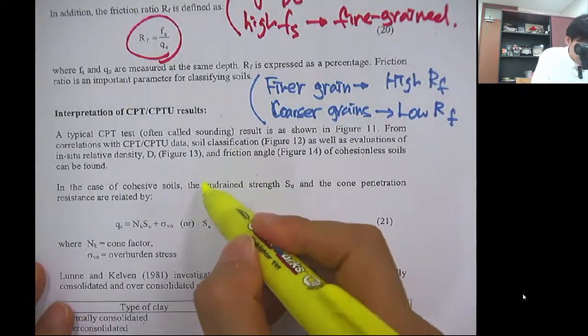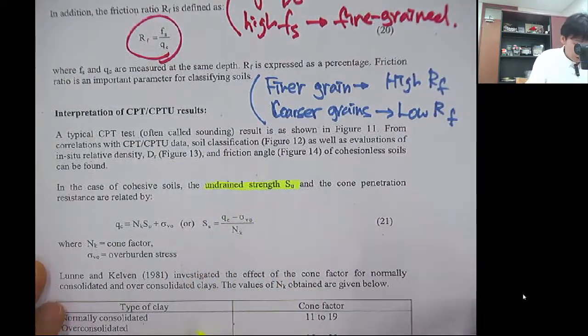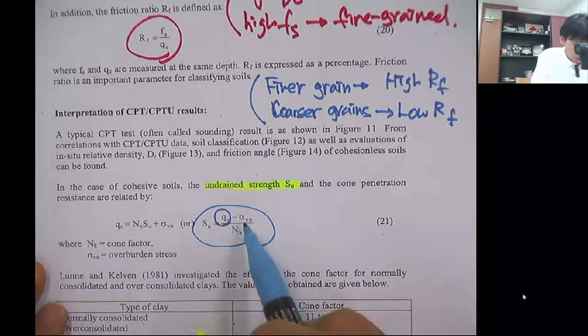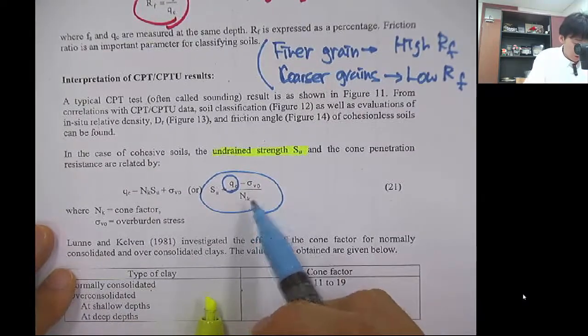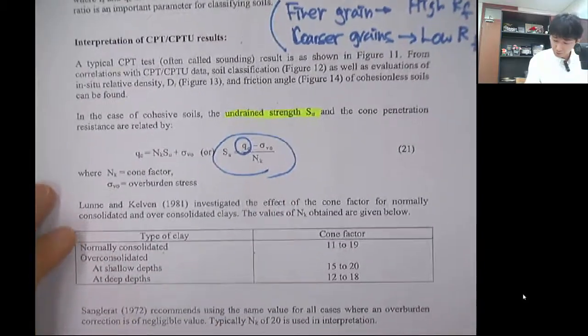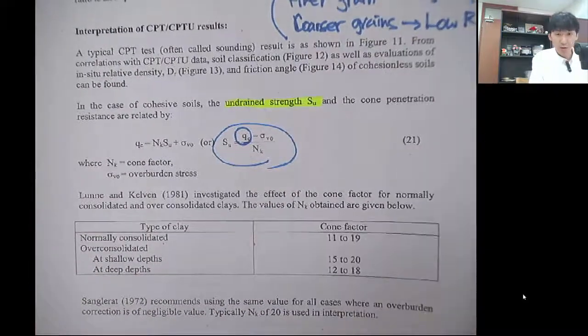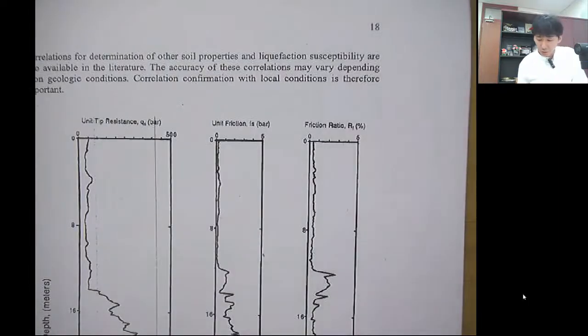The undrained strength SU is correlated to the QC value here. It is corrected for the vertical effective stress, and there is a cone factor here, NK.